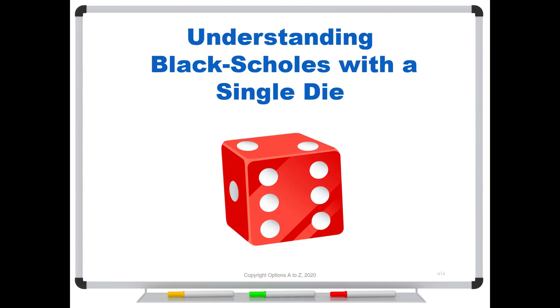We're going to take a look at how to understand the Black Scholes model with a single die. I've talked about Black Scholes and fair value in a number of videos, but I think a lot of times traders don't quite follow what it means when we say that the option has a fair value behind it. And what does that mean?